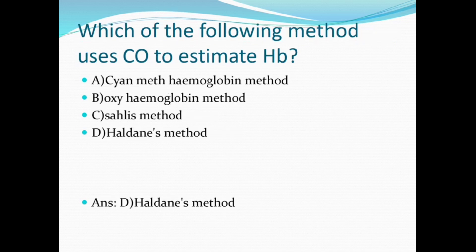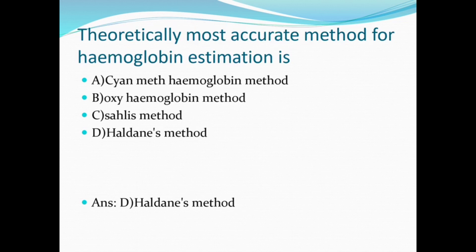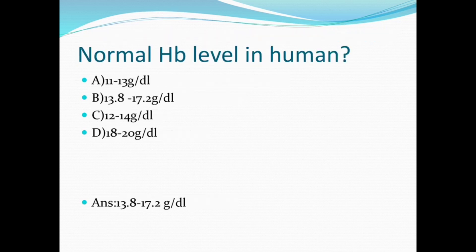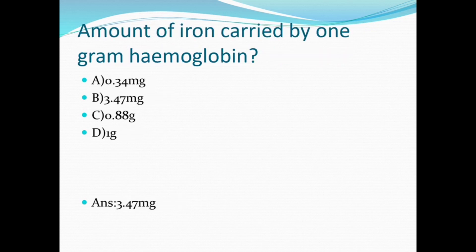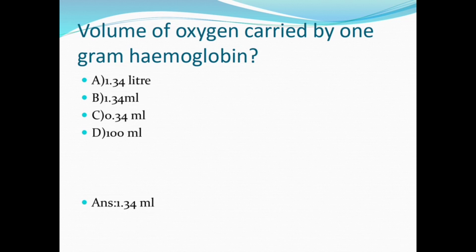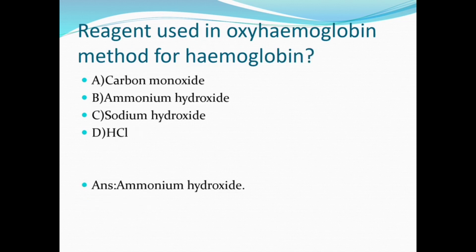The reaction used in Drabkin's method includes all components except normal saline. The Sahli method of hemoglobin estimation uses 0.1 N HCl. Haldane's method uses CO₂ to estimate hemoglobin. The theoretically accurate method for Hb estimation is Haldane's method. Normal Hb level in humans is 13.8 to 17.2 g/dL. Amount of iron carried by one gram of hemoglobin is 3.47 mg.